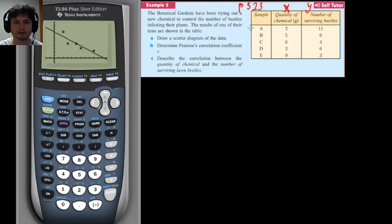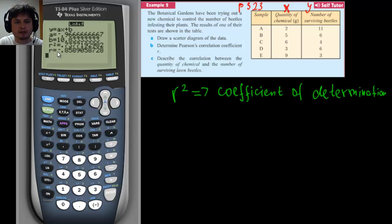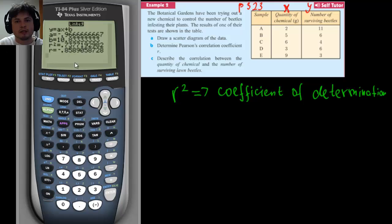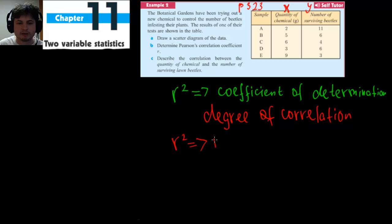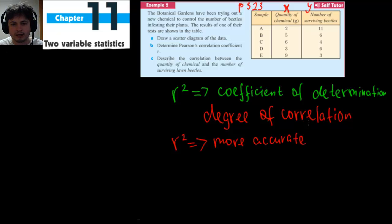Before we finish, let's briefly discuss R-squared, called the coefficient of determination. It's simply the square of the Pearson correlation R. R-squared is a slightly more accurate way of expressing correlation, especially when direction (positive or negative) doesn't matter — it just expresses the degree of correlation. The number is a bit lower than R, but they're essentially the same measure, with one being squared. And that's it for correlation and the beginning of Chapter 11: Two Variable Statistics. Thanks for watching, good luck, and bye!